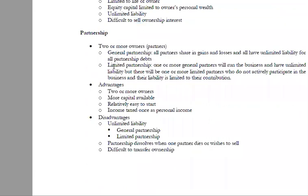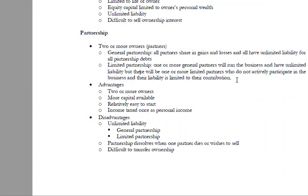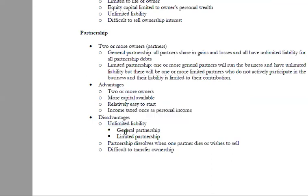Next, partnership can be general or limited. In a general partnership, all partners share capital and have unlimited liabilities. In a limited partnership, there are one or more general partners who run the business and have unlimited liabilities, and one or more limited partners who do not actively participate. With more partners there is more capital, but unlimited liabilities remain an issue in both general and limited partnerships.